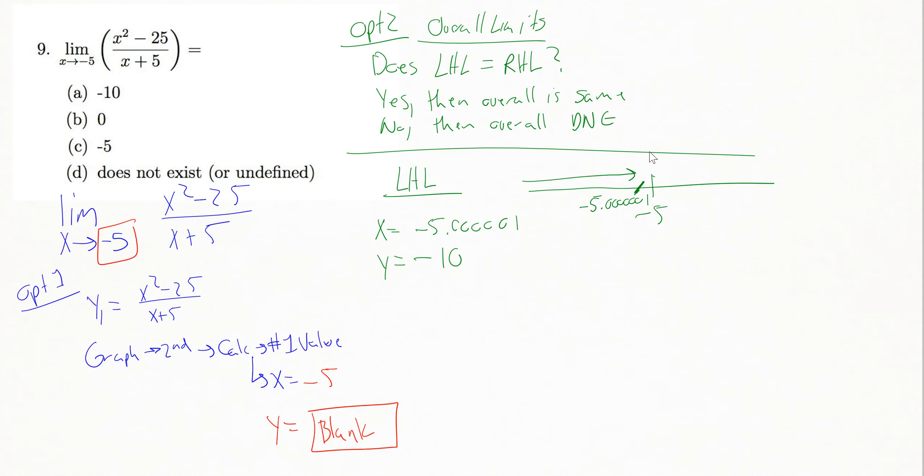I now need to compare that to a right-hand limit and see if those things are equal. So I want an x value really close to negative 5 coming in from the right. I would choose something like negative 4.99999, a whole bunch of nines.